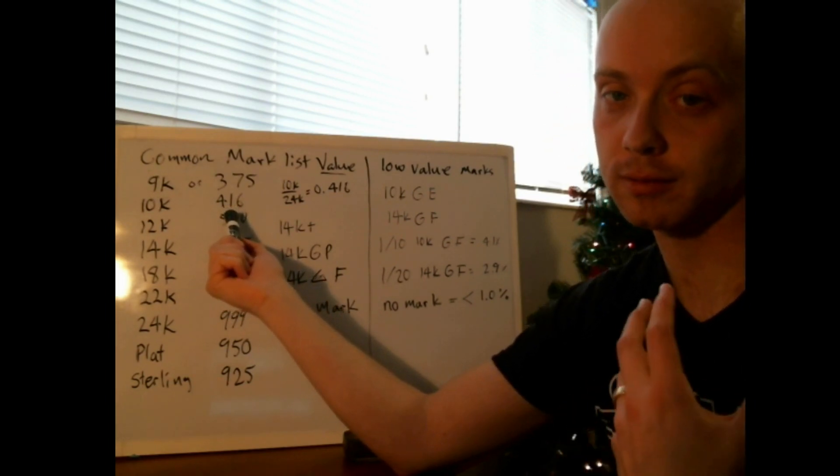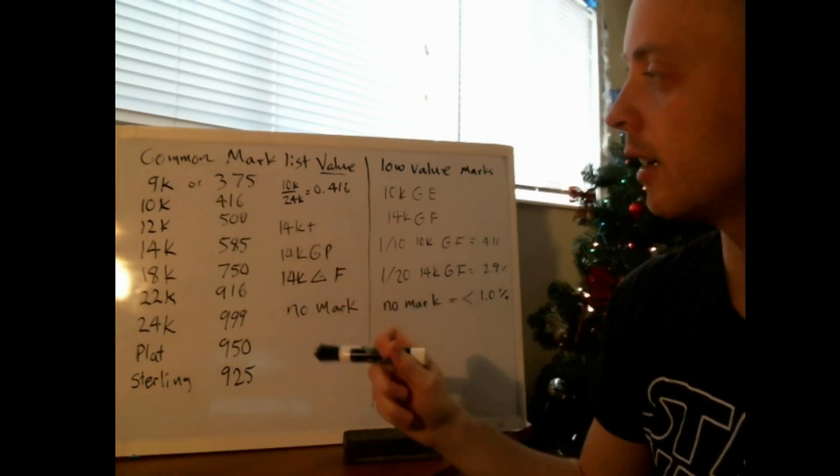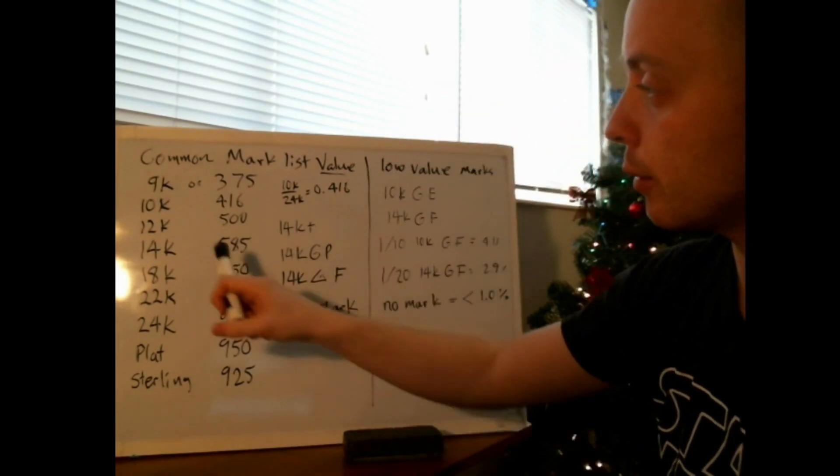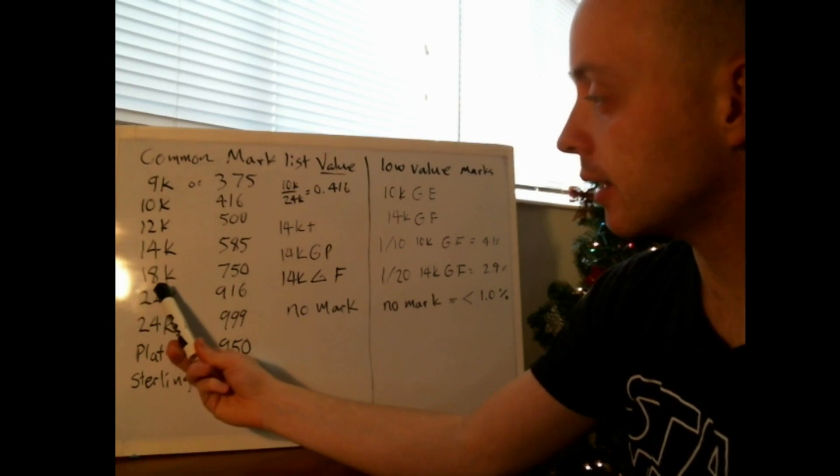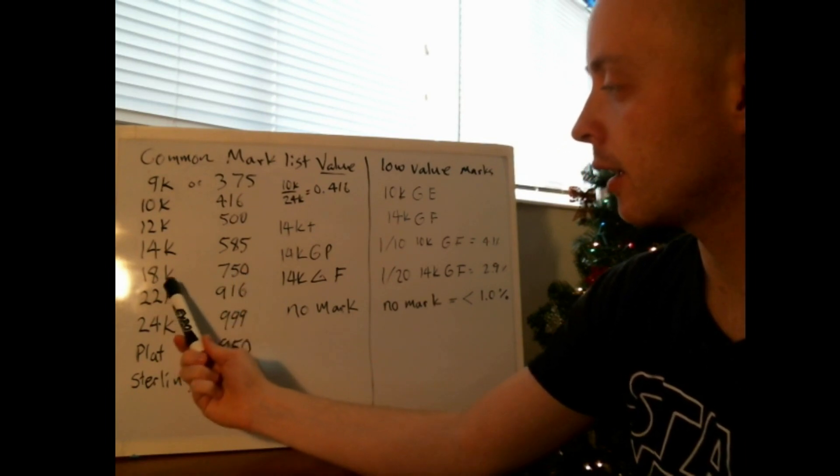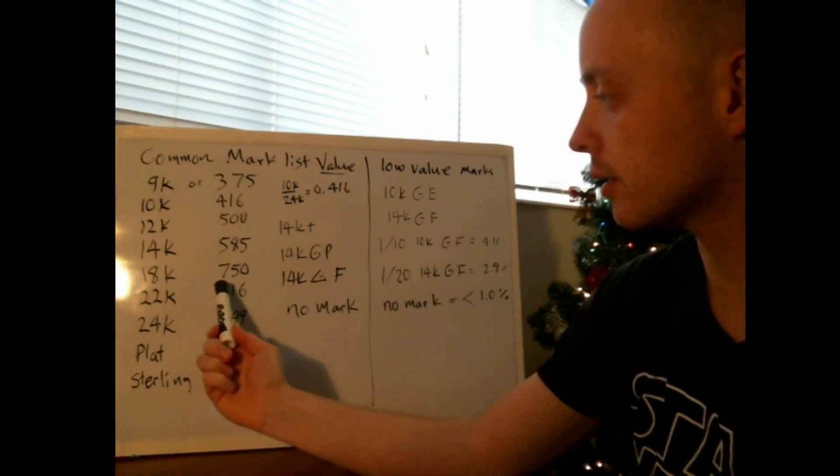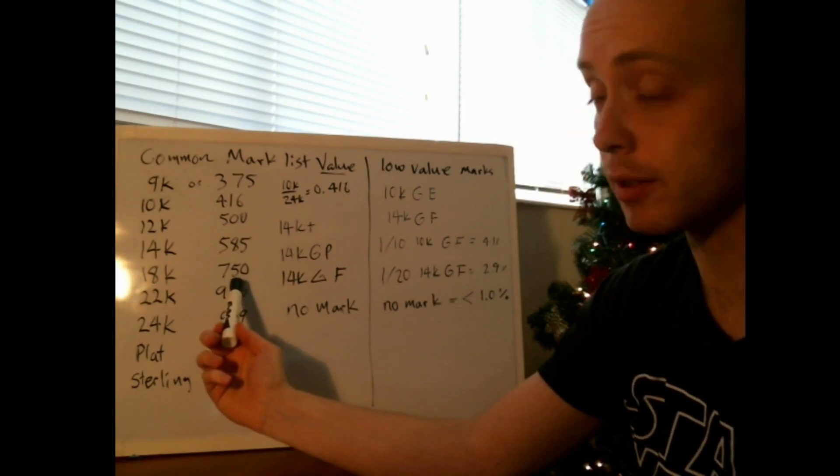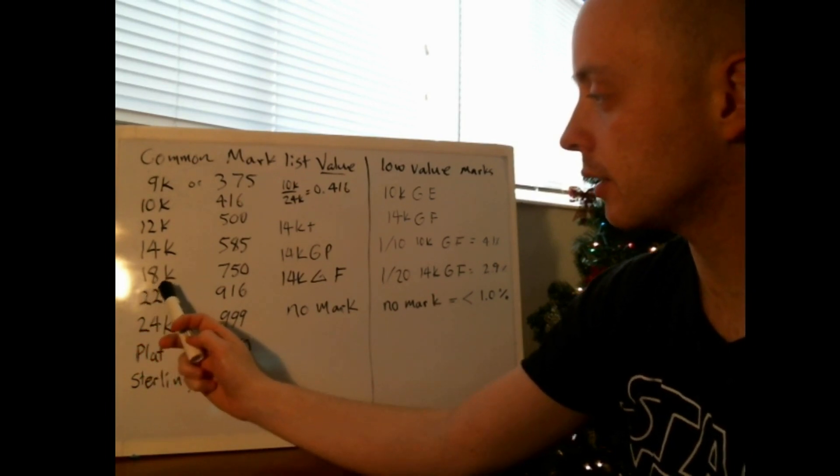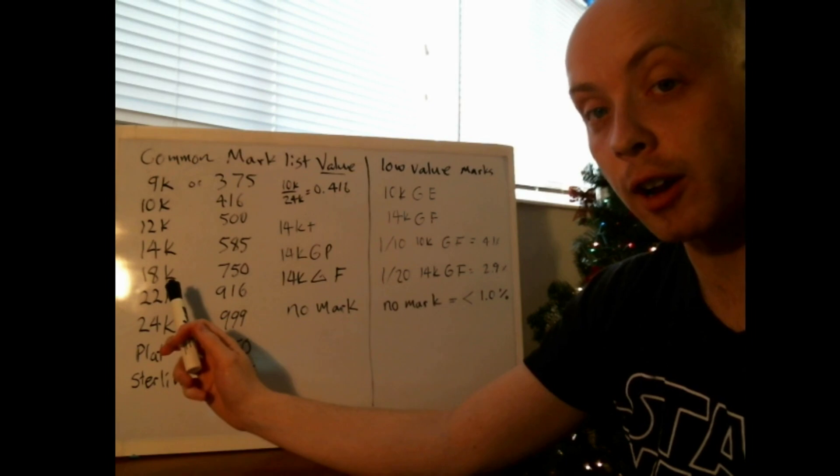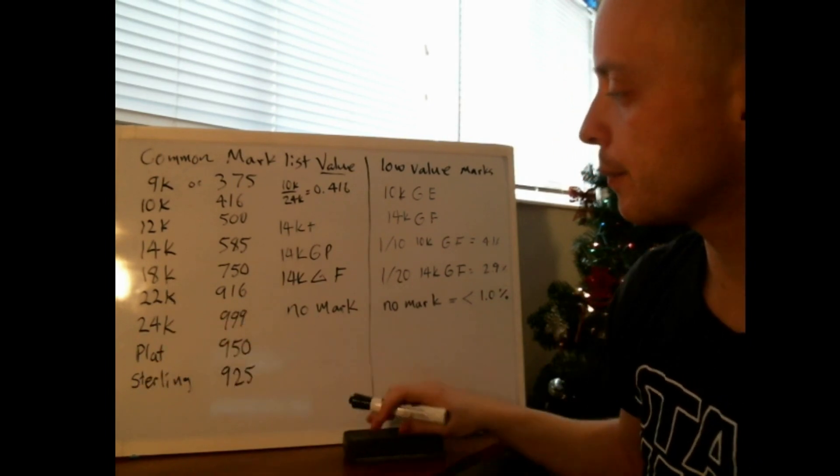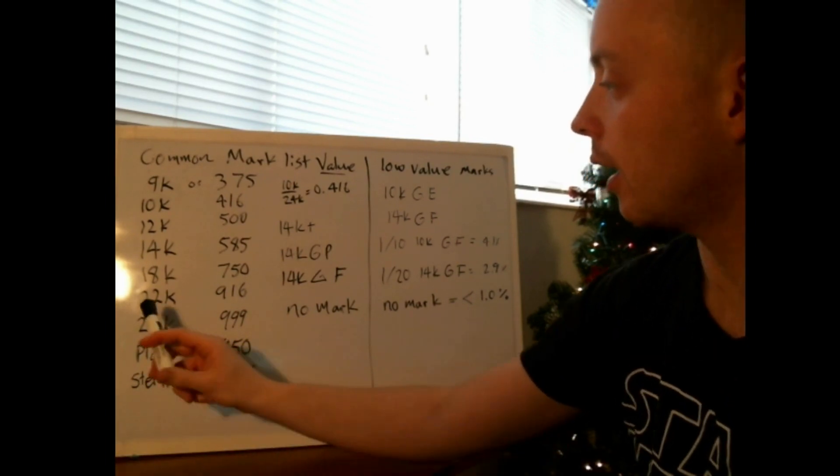You'll even see that marked on some jewelry - they take and put a 416 on the jewelry so you know what it contains. Most common marks here in the U.S. are 10 karat, 14 karat. Sometimes you'll see 18 karat or 750, and that's again 75 percent, or for every thousand parts, 750 of them are gold or silver or whatever the metal is.